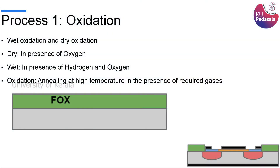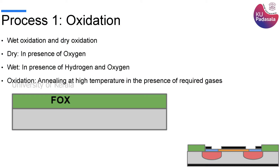If you look at the bottom image, the green thing is not everywhere — it is only at the edges. So you want to selectively remove certain areas of a material. When you want to selectively remove, you have to go for a process called photolithography, and then use the etching technique to remove that material.